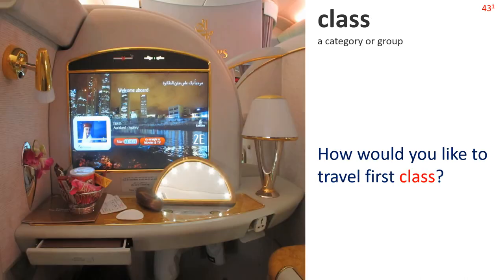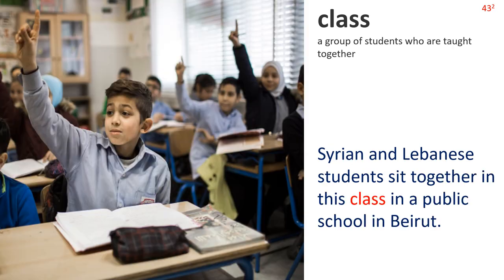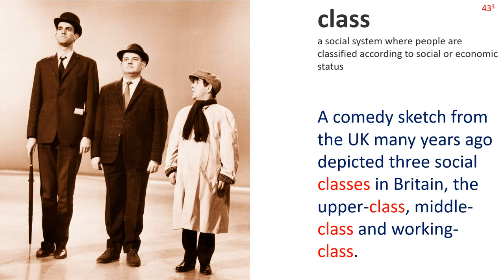Class — Definition 1: a category or group. How would you like to travel first class? Definition 2: a group of students who are taught together. Syrian and Lebanese students sit together in this class in a public school in Beirut. Definition 3: a social system where people are classified according to social or economic status. A comedy sketch from the UK many years ago depicted three social classes in Britain: the upper class, middle class and working class.